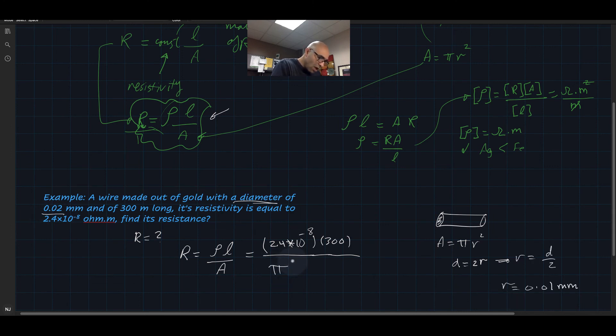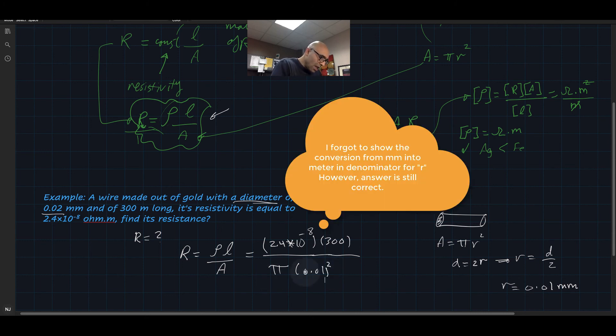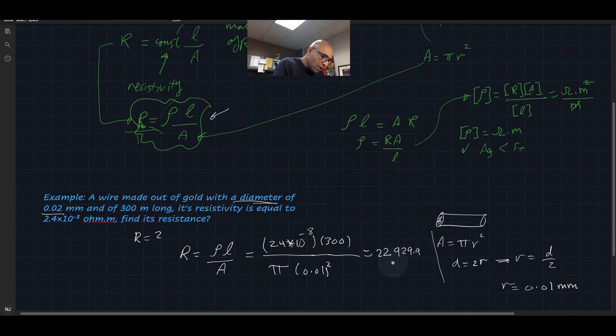Now let's look here. So this is pi r squared. So 0.01 squared. And if I make this calculation, I get r is equal to 22,929.9 ohm. So that's what the resistance of that gold wire is. Sometimes we like to write this this way. So 22.93 kilo ohm.